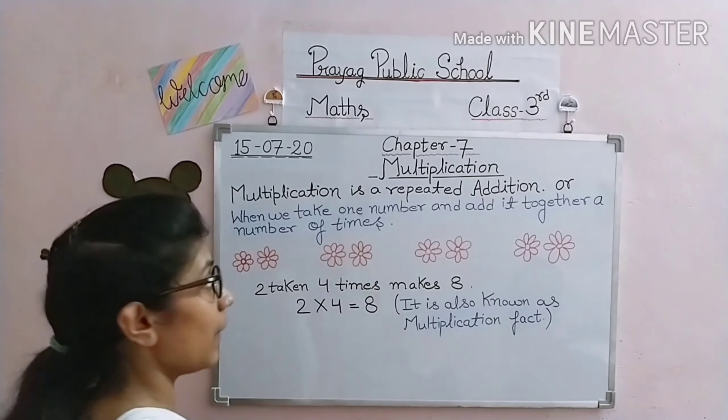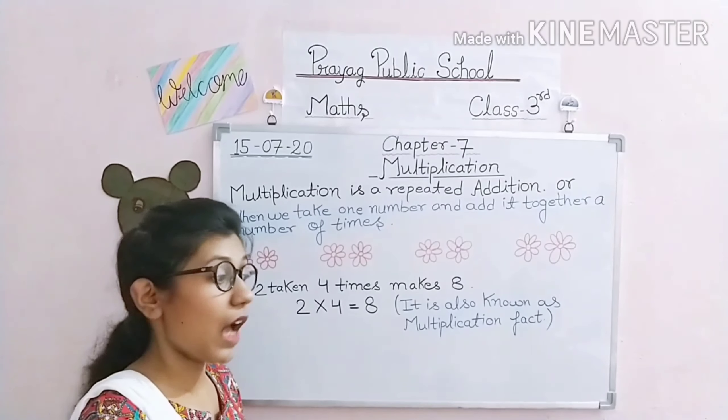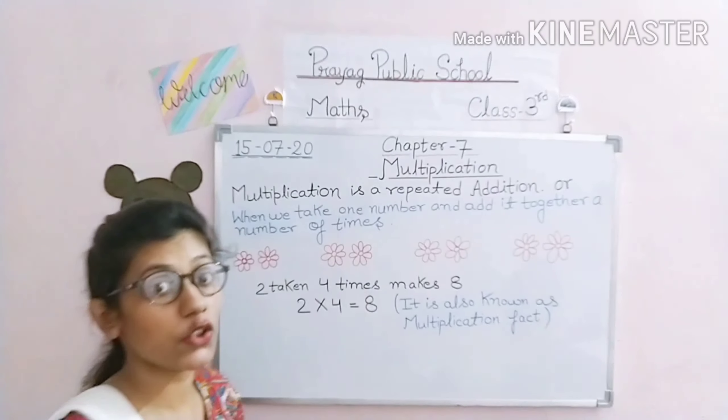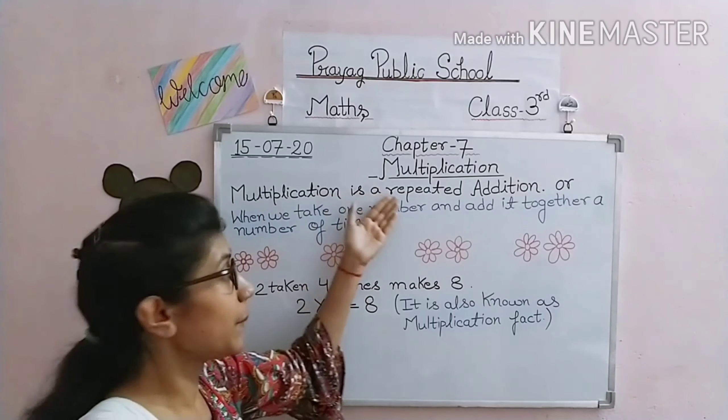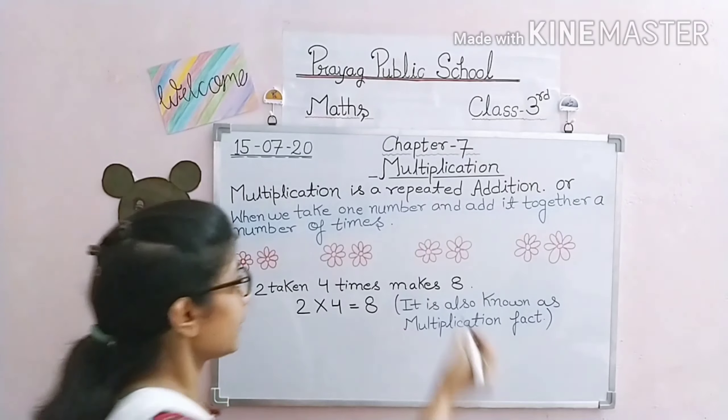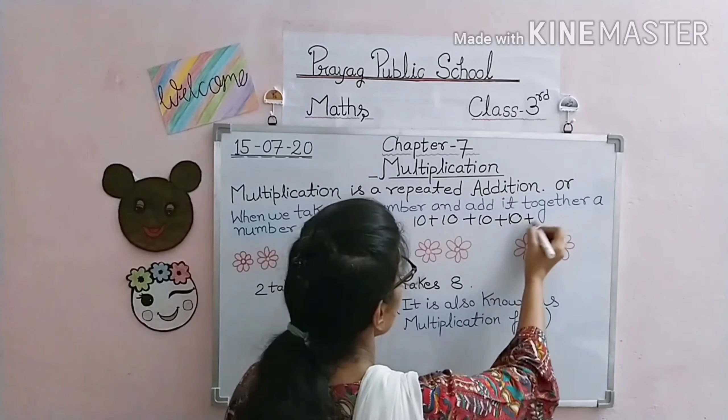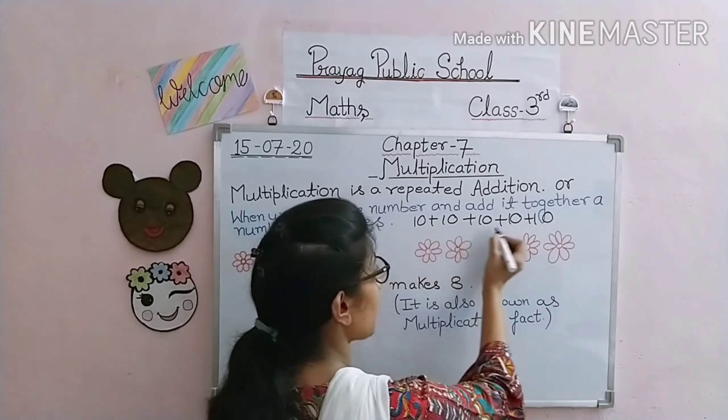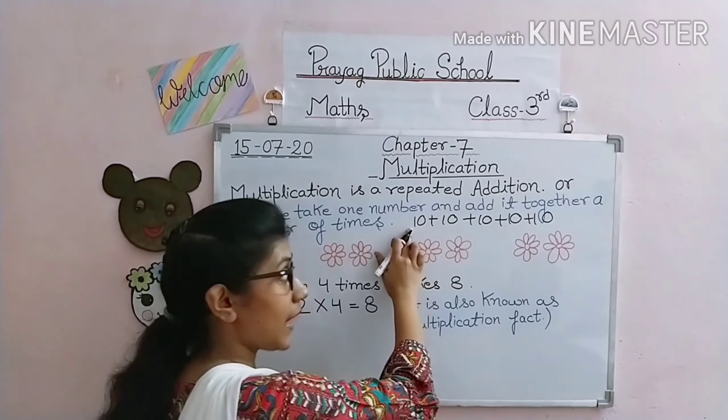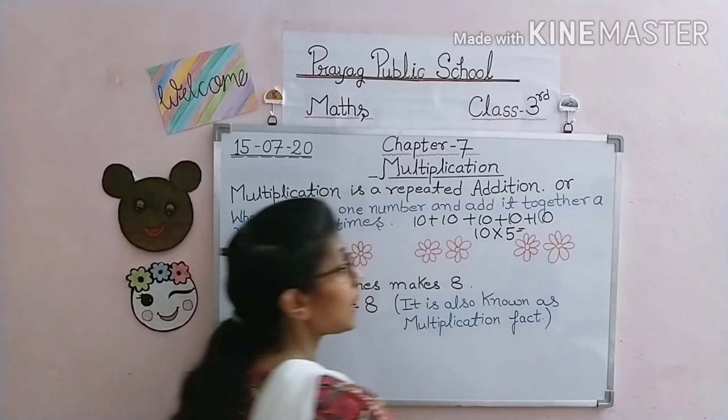Take one number and add it together a number of times - it's called multiplication. Suppose you have five friends and you give each friend ten chocolates. So we will add 10 five times. This is called multiplication. This is easy to do. If we multiply 10 by 5, we will get the result: 10 times 5 is 50.